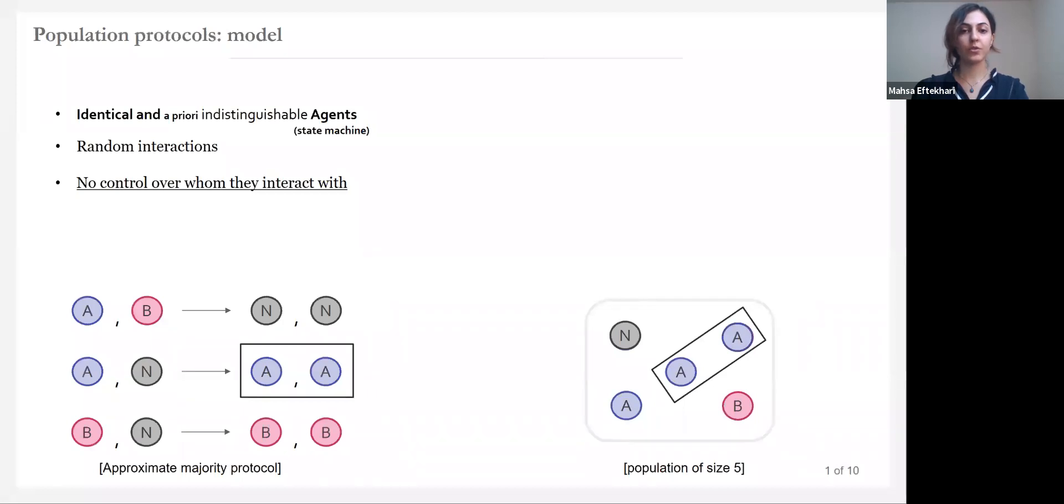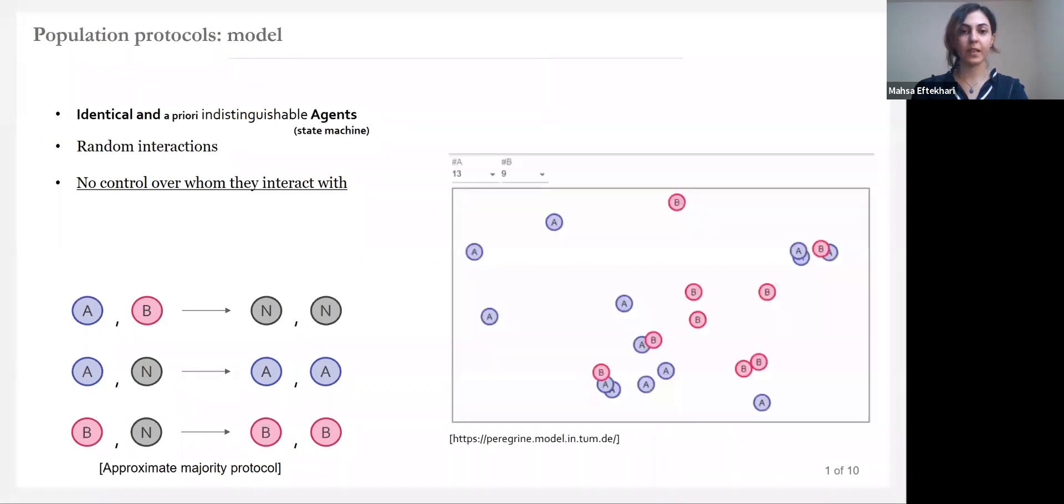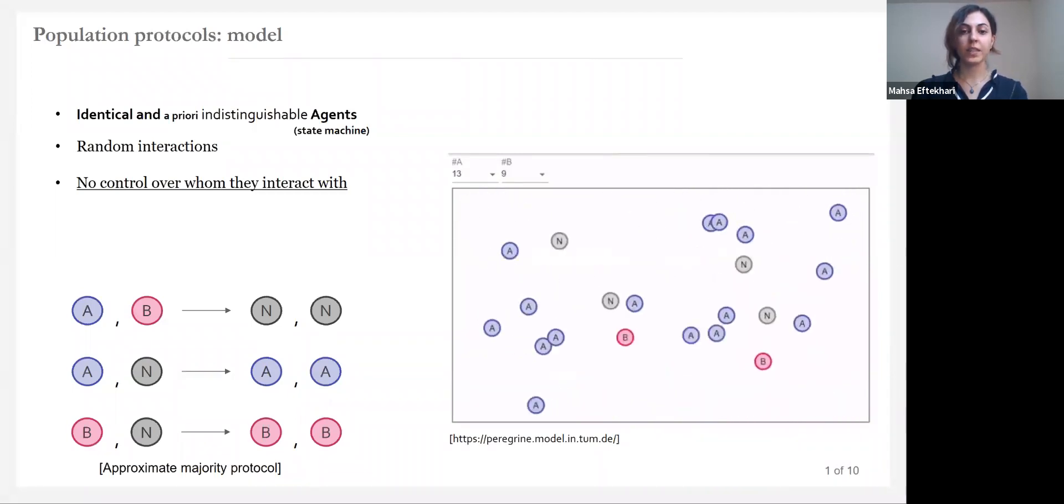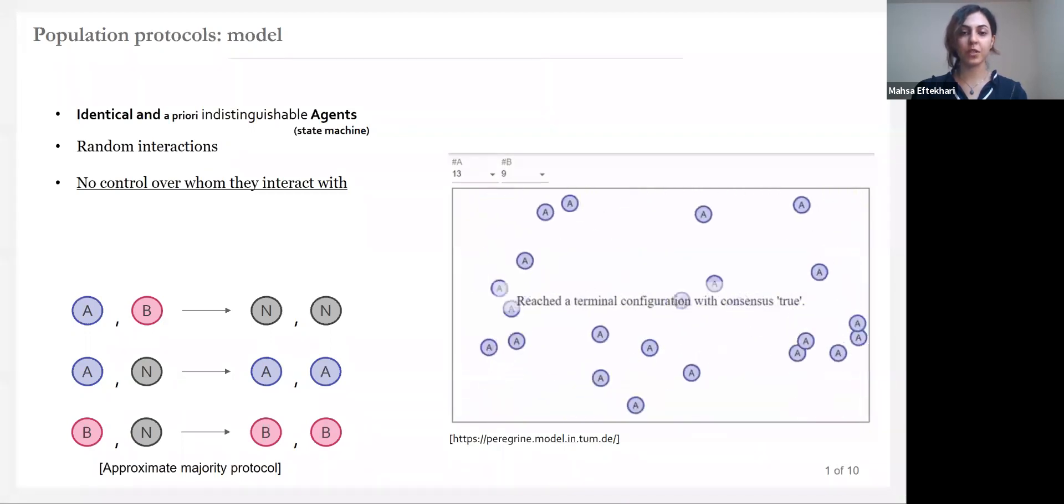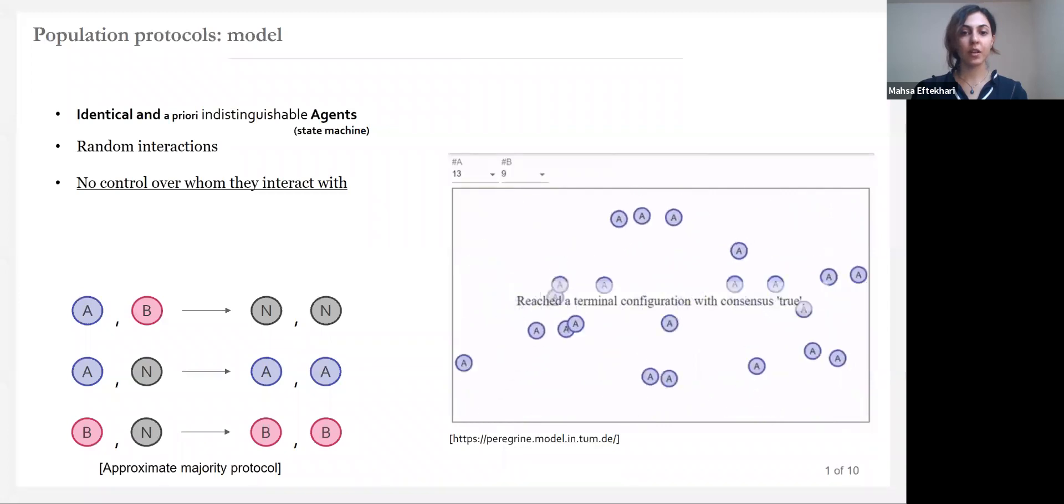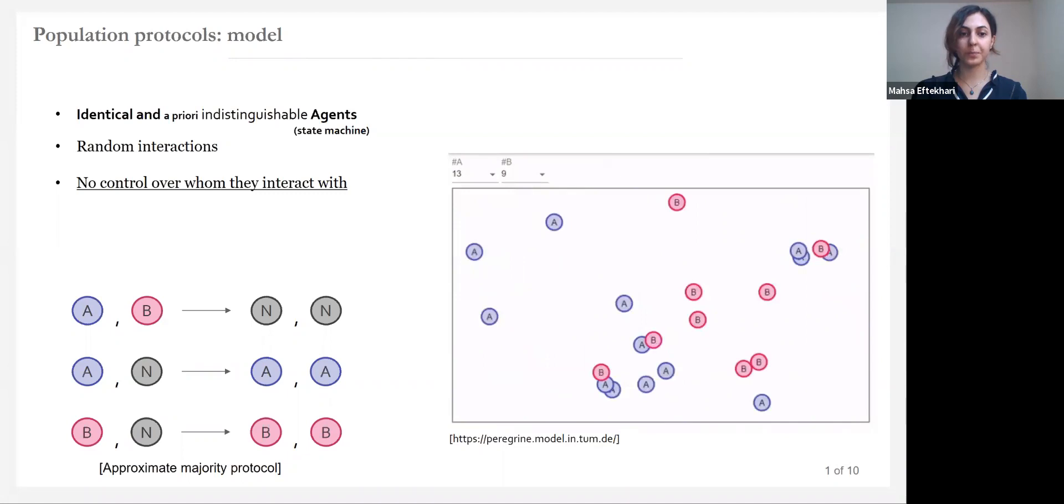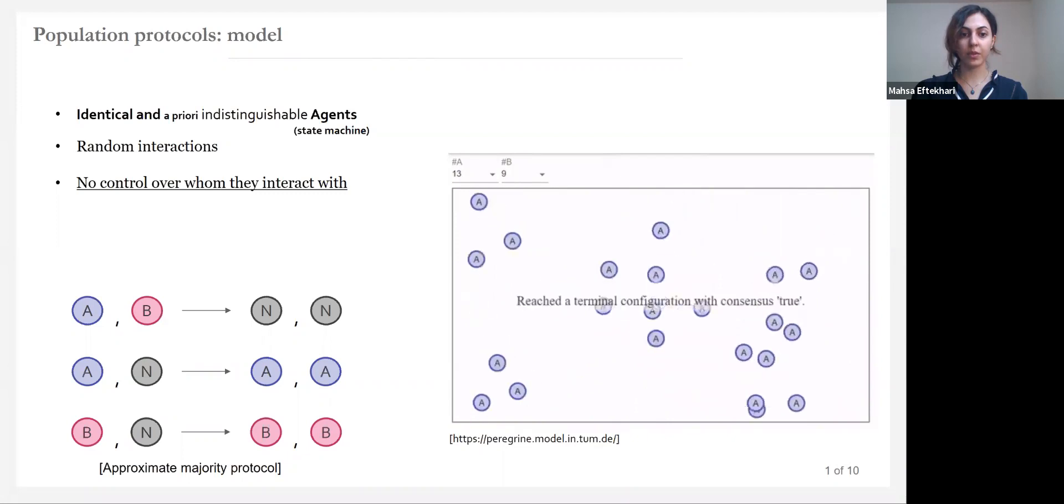We study protocols for the majority problem that is determining in an initial population of N agents each with one of two opinions A or B whether there are more As or more Bs. Population protocols are an abstract model for molecular computation where the chemistry entities randomly bump into each other and may or may not generate new species. Here is a simulation of the rules we just went over from the population protocol simulator called Peregrine. As you see, eventually the majority convinces the population.